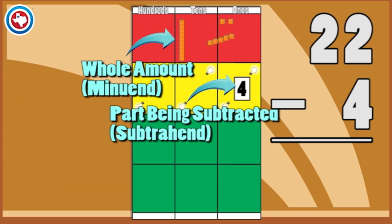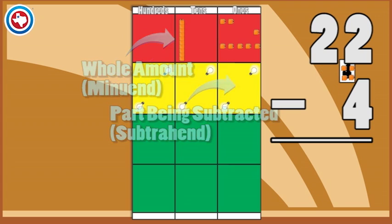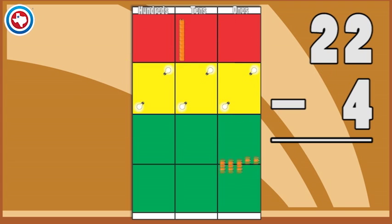Students then decide if they have enough in that column to subtract or if they need to regroup their base 10 blocks before subtracting.